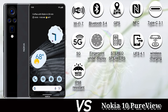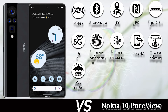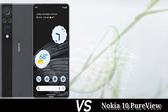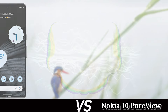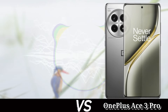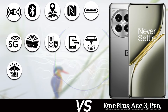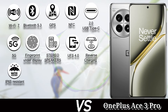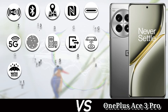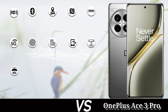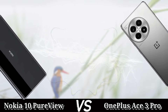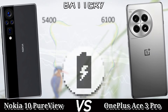The battery of the Nokia 10 PureView is 5400mAh with 120W fast charging and 50W wireless charging. The OnePlus A3 Pro has a 6100mAh battery with 100W fast charging but no wireless charging support. The Nokia 10 PureView has no price tag announced yet, while the OnePlus A3 Pro has a $500 price tag.